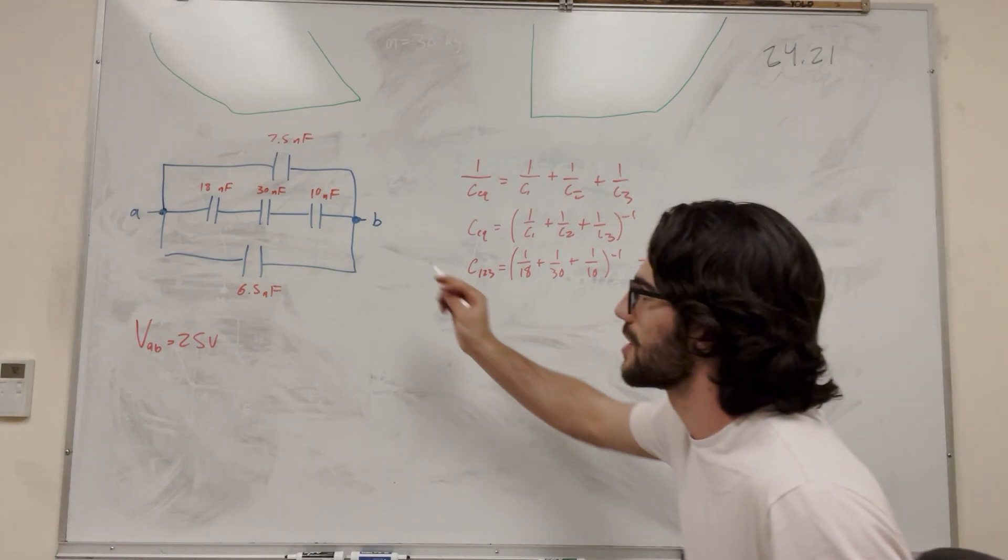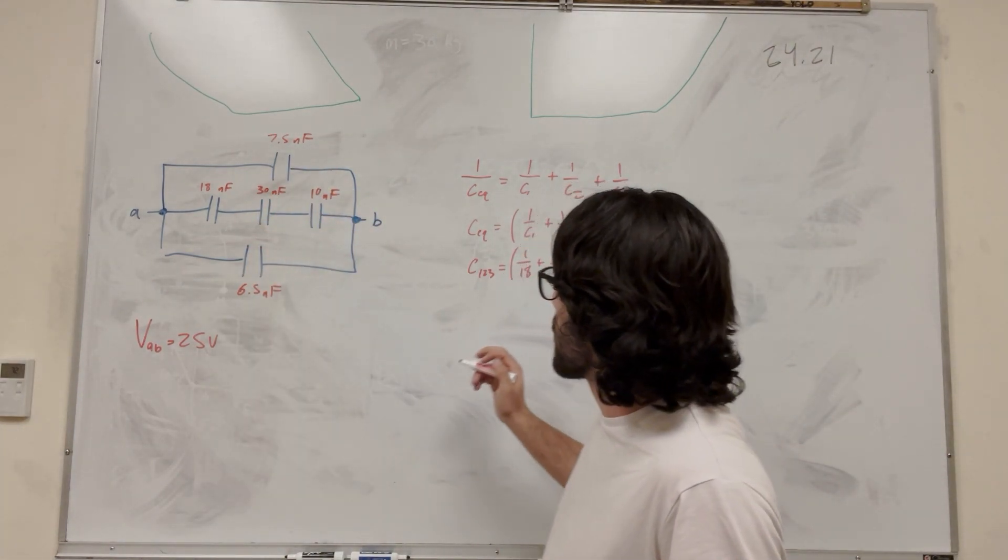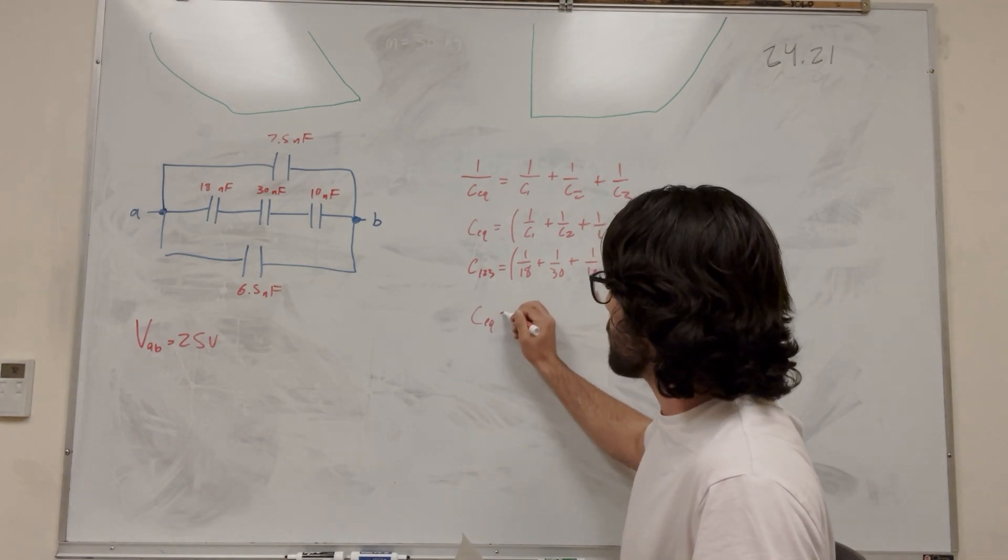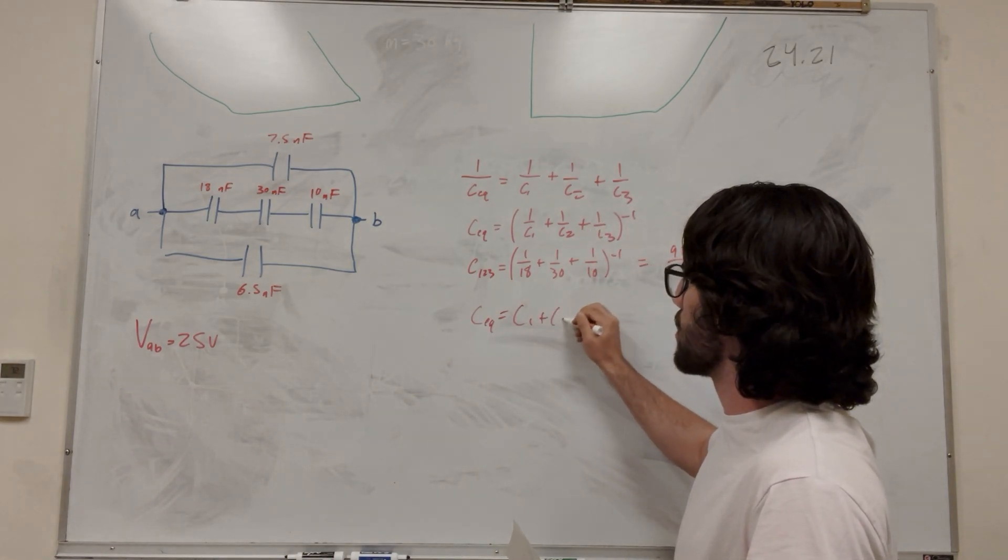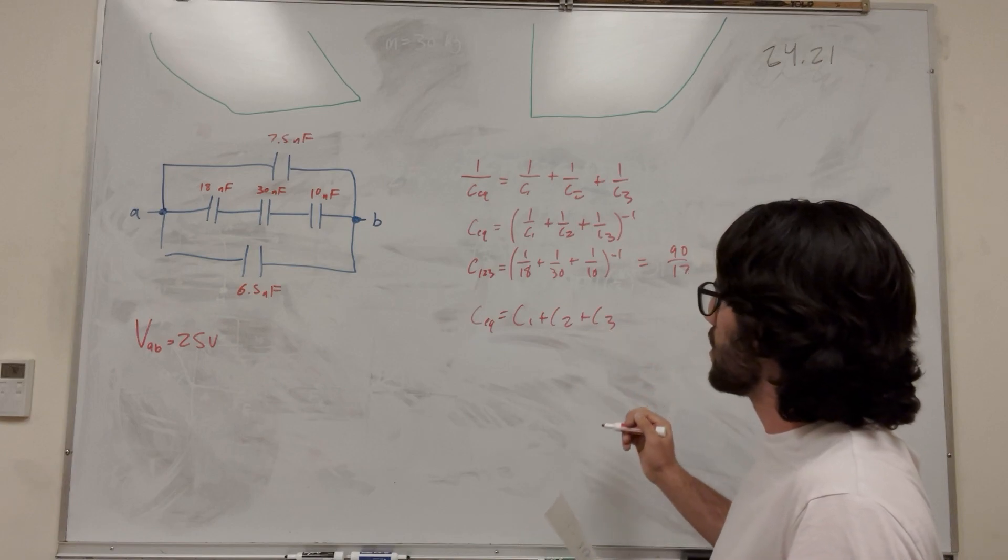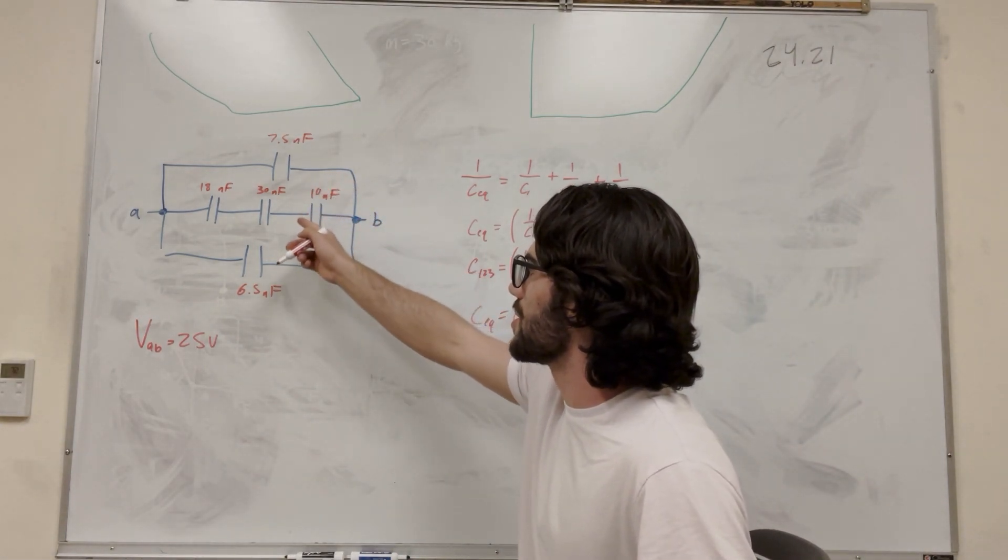So that's how you do it for this series. So now we want to combine all the parallel together. So for parallel, that's going to be equal to C1 plus C2 plus C3. So in this case, 1, 2, 3.